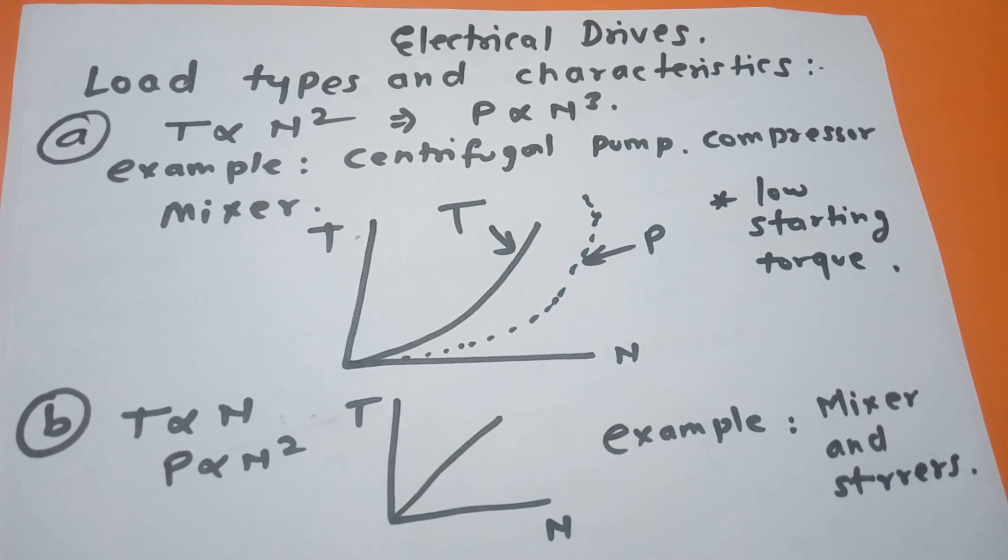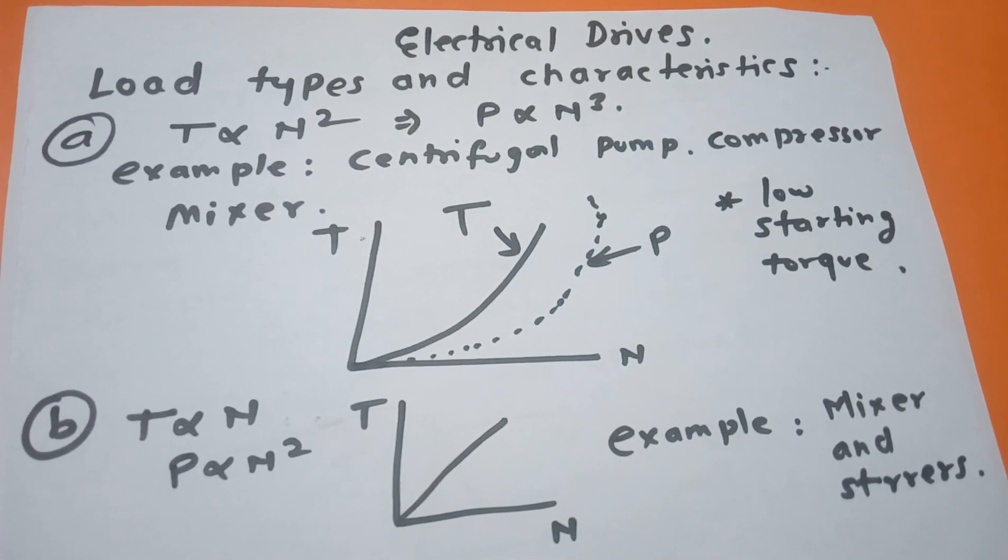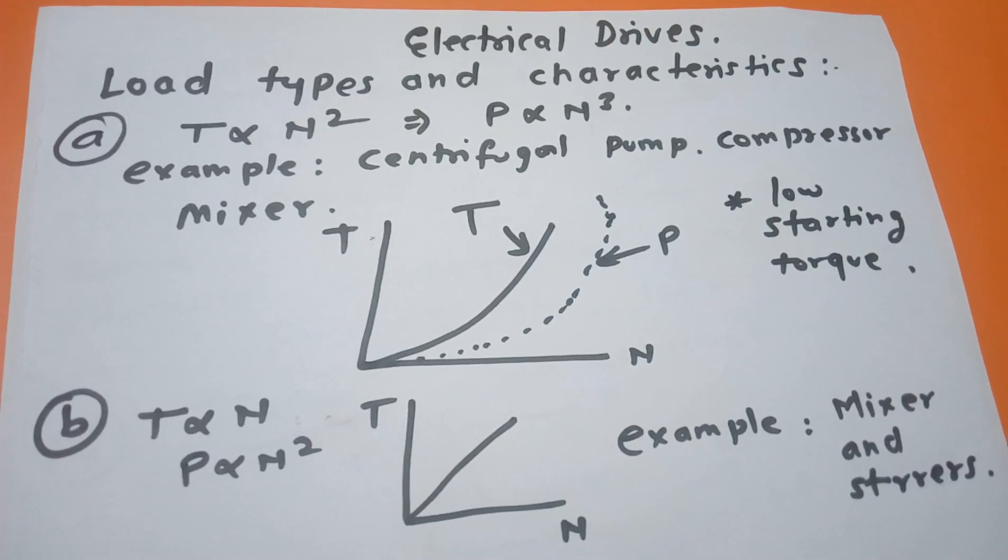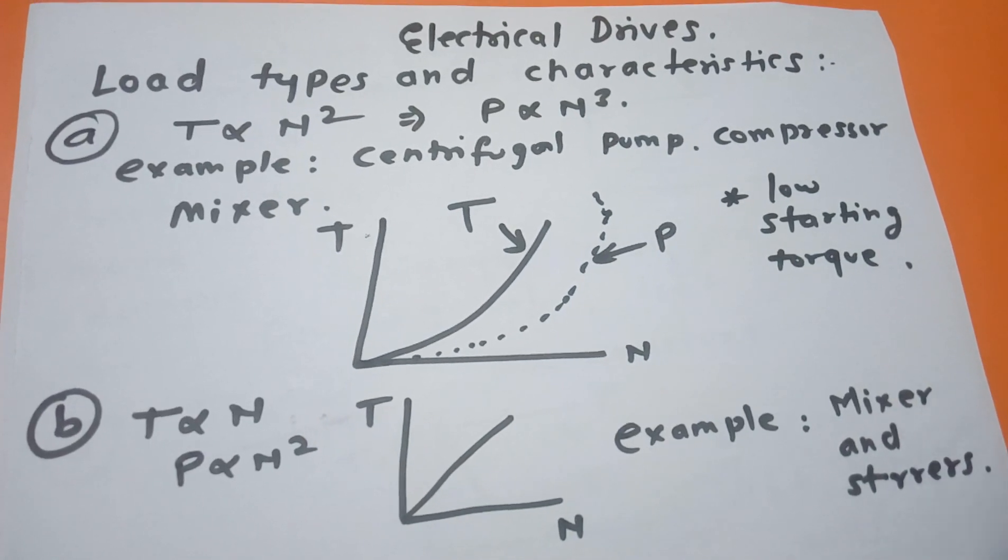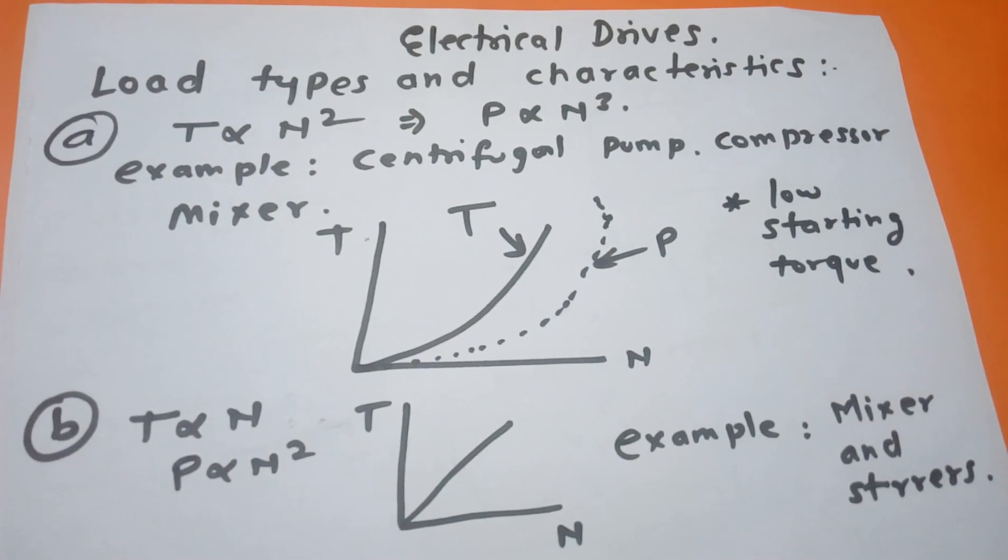For that purpose, the load type characteristics are very important. The first is the torque is proportional to speed square. This is called parabolic characteristic. In this case, power is also proportional to speed cube.